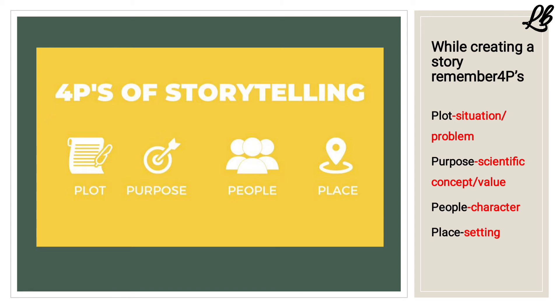The third P is People — the characters. You can decide on the characters of your story to whom the audience can relate. For example, in the story I have framed, I have used the famous cartoon character Chhota Bheem. The fourth P is Place — the setting, decided depending on the theme of the story. For dengue, you can select maybe a playground, home, or outdoors.